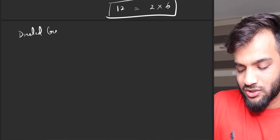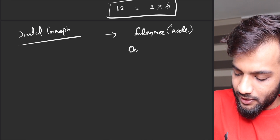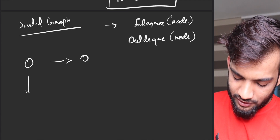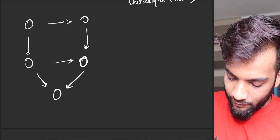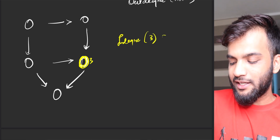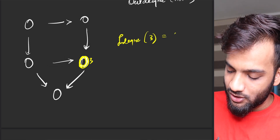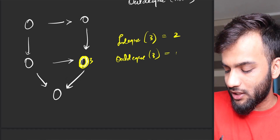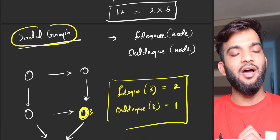Now let's talk about directed graphs. In a directed graph, we have two different things: the indegree of a node and the outdegree of a node. The indegree is the number of incoming edges — edges that go into the node. The outdegree is the number of outgoing edges. For example, for node 3, if two edges come in, the indegree is 2; if one edge goes out, the outdegree is 1.